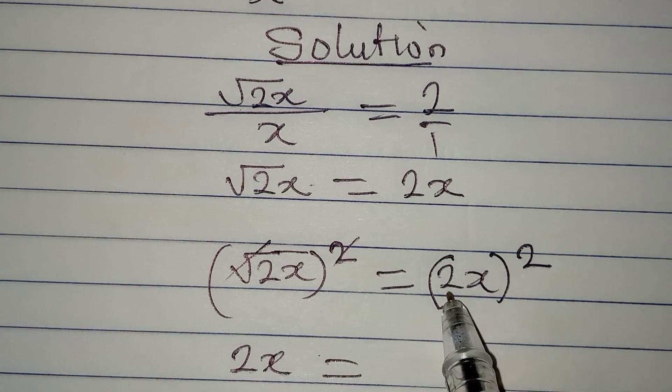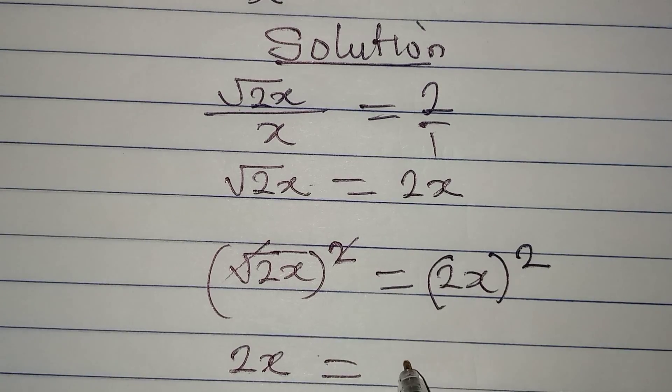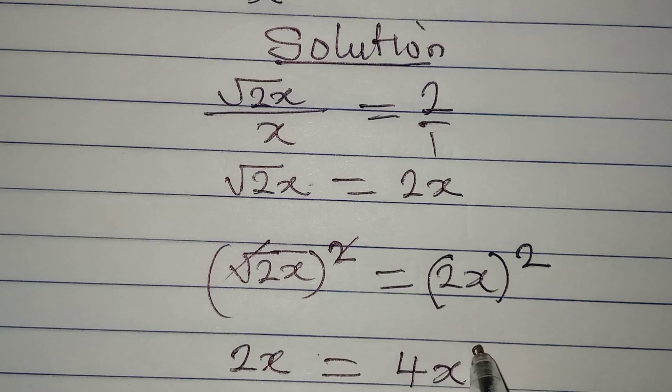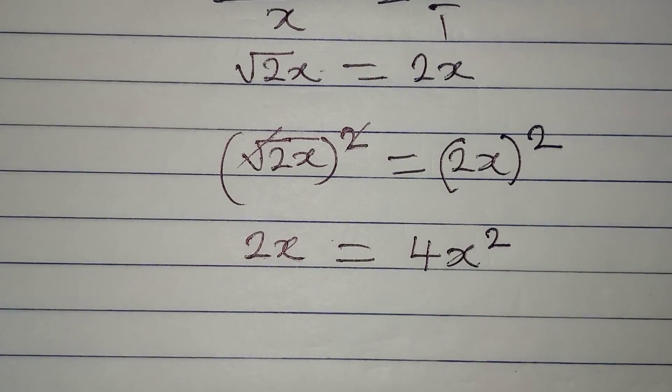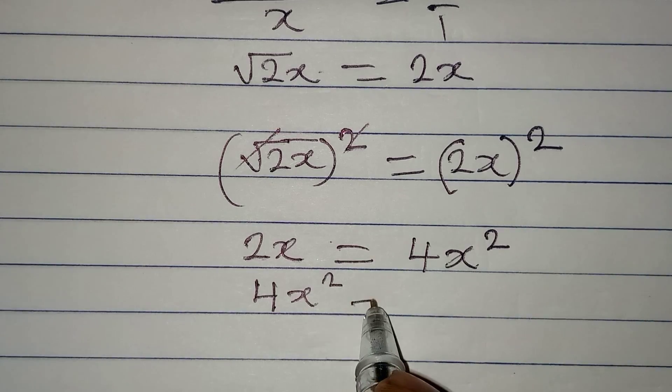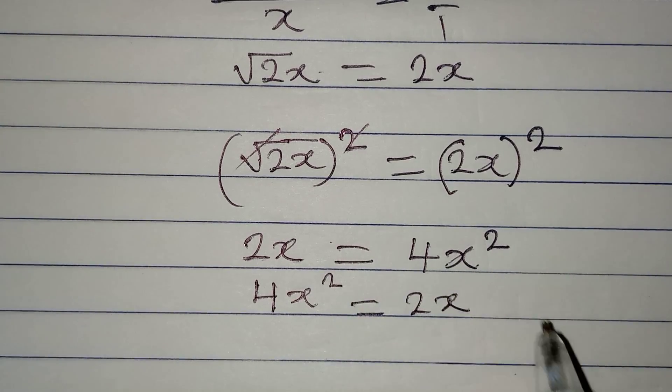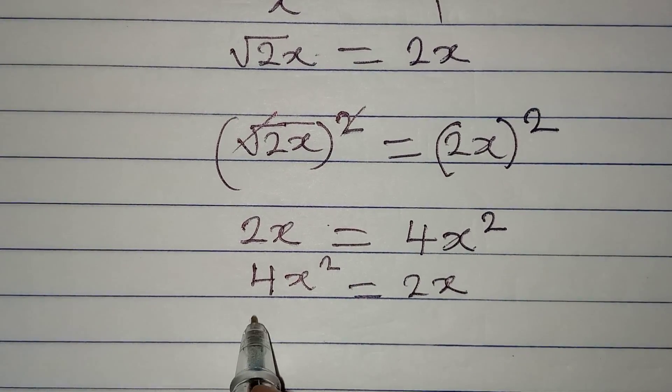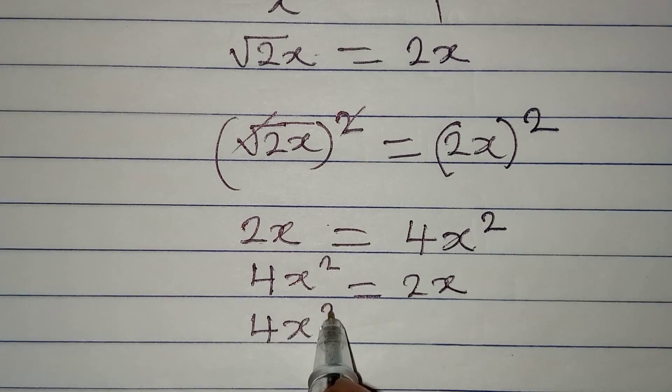Now let's rearrange this. This is the same thing as 4x squared to be equal to 2x. Now bring everything to the left so we have 4x squared minus 2x which will give 0.